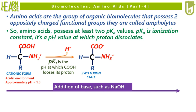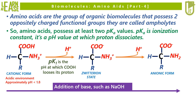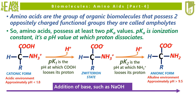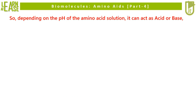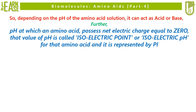On further increase in pH, NH3+ loses its proton and gets converted to NH2, and the amino acid now exists in anionic form. The pH at which NH3+ loses its proton is termed pKa2. Some amino acids possess more than two pKa values when their R chain possesses a functional group with dissociable protons. Depending on the pH of the amino acid solution, it can act as acid or base. The pH at which an amino acid possesses a net electric charge equal to zero is called the isoelectric point or isoelectric pH, represented by Pi.